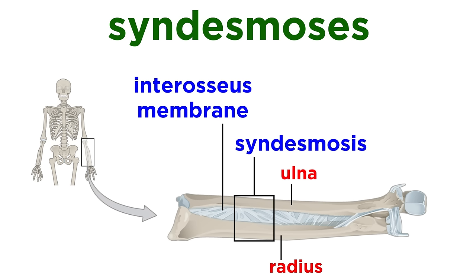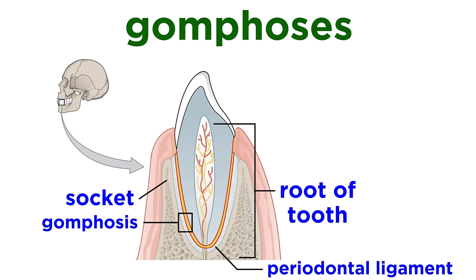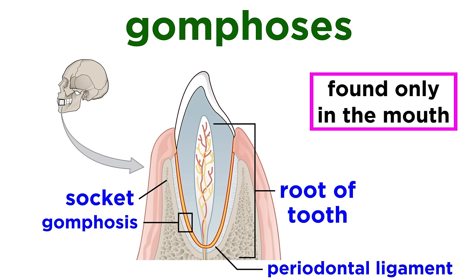The next type of fibrous joint is syndesmoses, where bones are connected only by ligaments, which are bands of fibrous tissue. We see this connecting the radius and the ulna. Here the fibers are short, which prevents movement. The last type of fibrous joint are gomphoses, which are like a peg-in-socket type of joint. This only occurs between a tooth and its alveolar socket, and the ligament present is called the periodontal ligament.